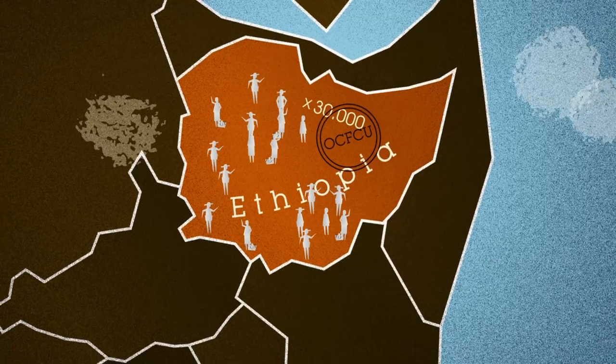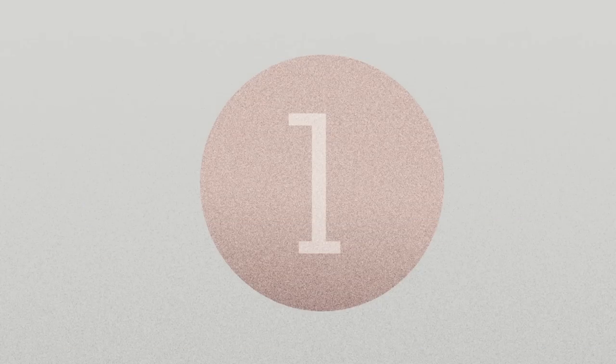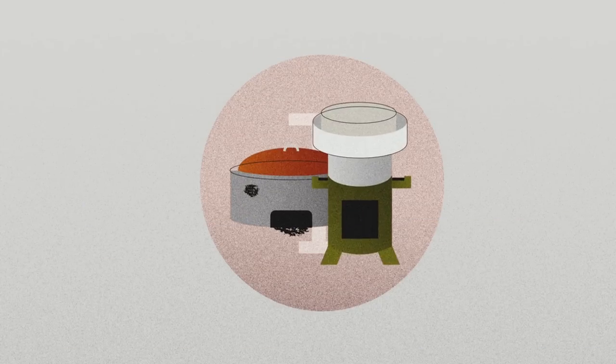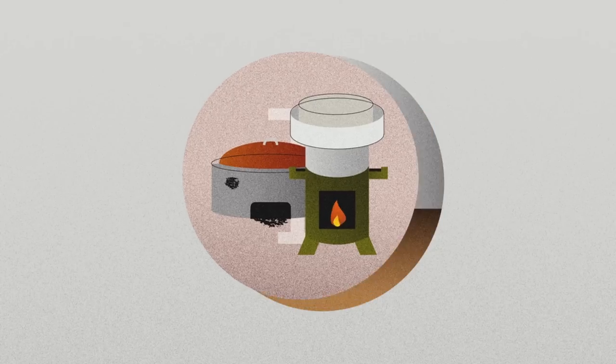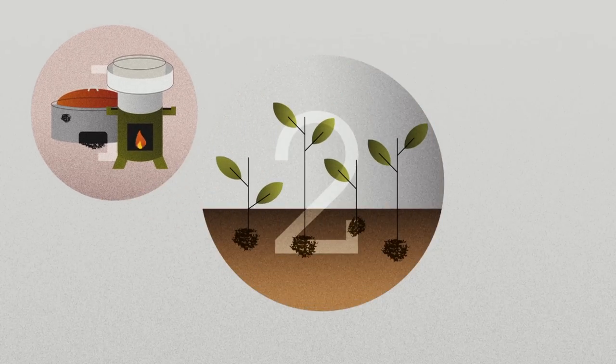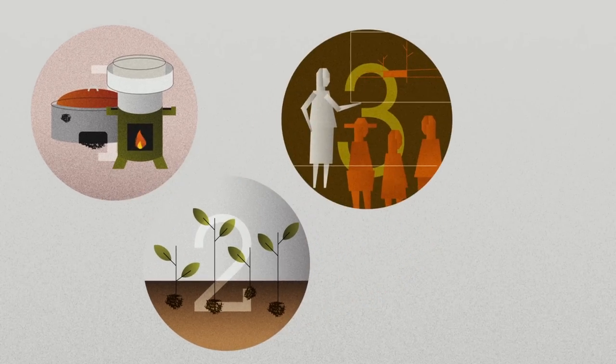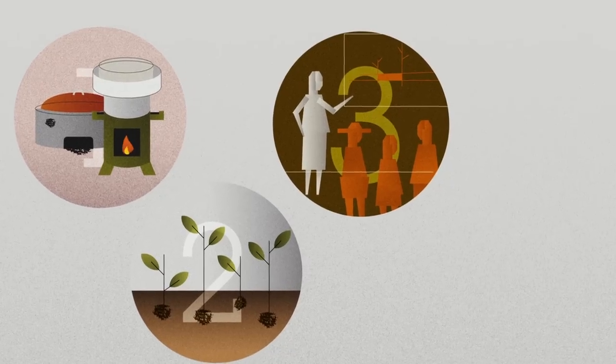Our program is threefold. First, distribute cook stoves that use far less wood. Second, plant new trees. Third, train coffee farmers how to make better use of existing farmland.